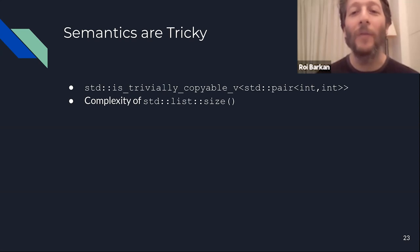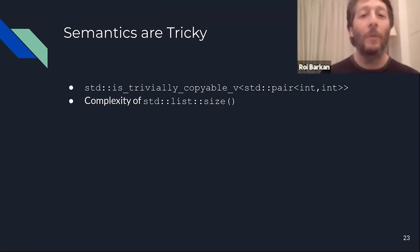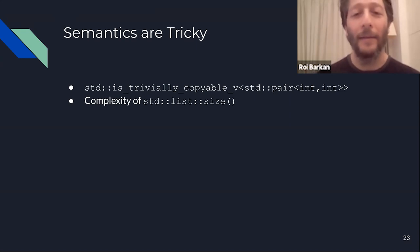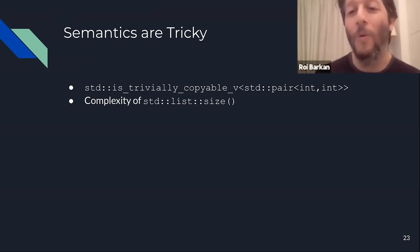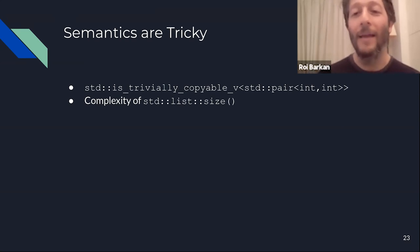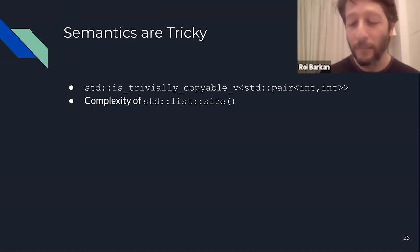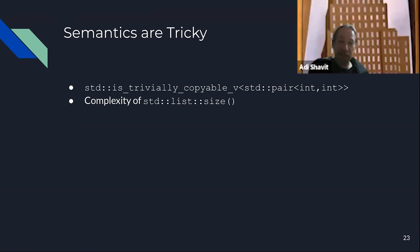First: is std::pair<int,int> trivially copyable? This is a Boolean expression — a predicate. Probably you remember std::pair is just a struct with two members, a struct of two ints. Is that thing trivially copyable or not? A participant guesses it has a private basis. Roy: 'Sadly, it is not trivially copyable — and the reason is just a mistake in the definition.'